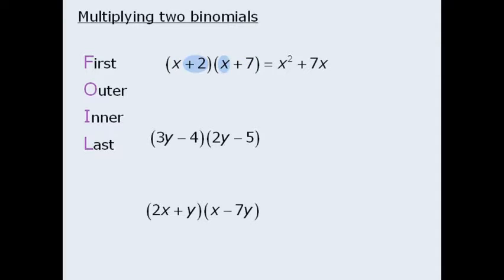Next we multiply the two inner terms. Here positive 2 times positive x is equal to positive 2x.